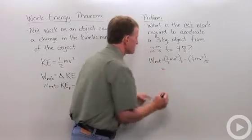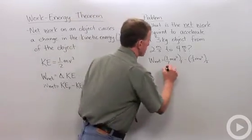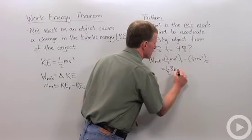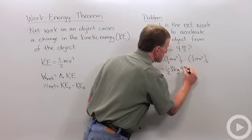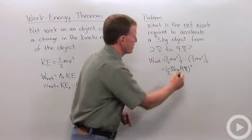Alright, so my final kinetic energy is one-half, and my mass is three kilograms, and my final velocity is four meters per second squared.